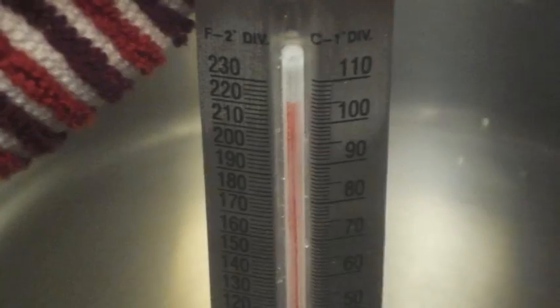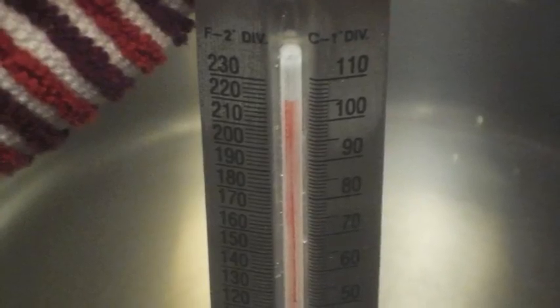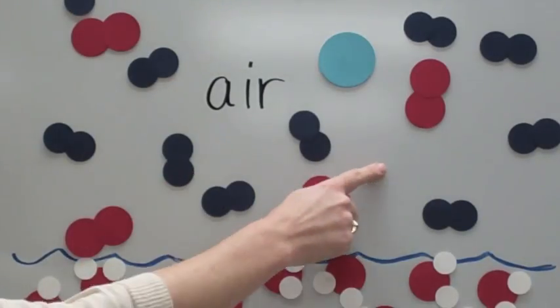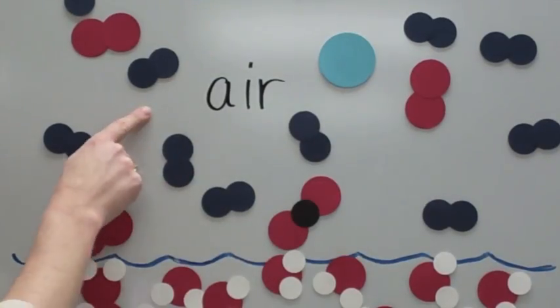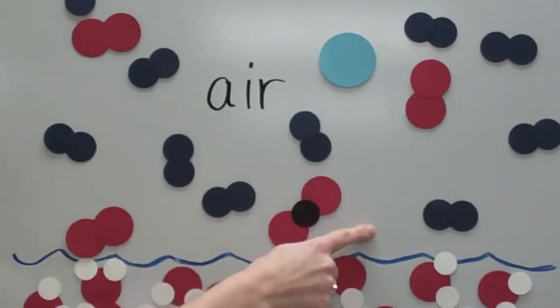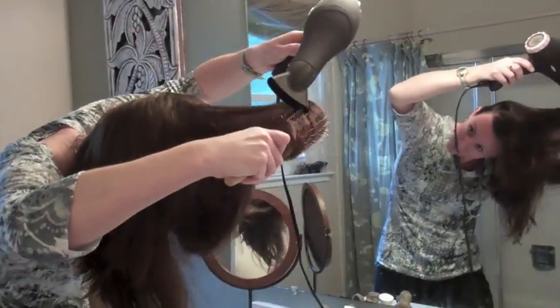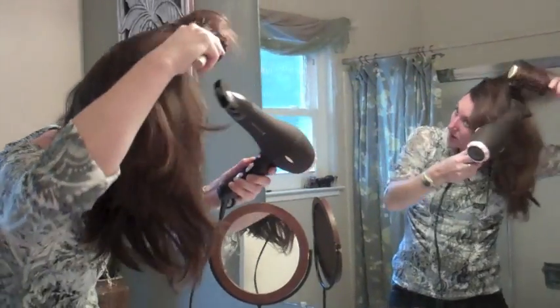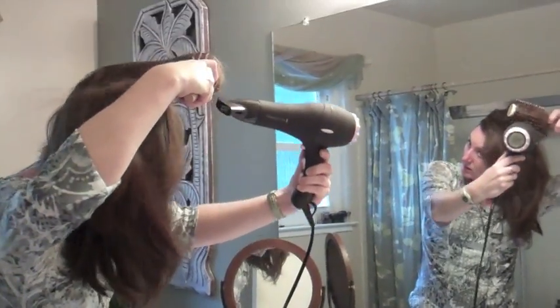Water boils at 212 degrees Fahrenheit, but water will evaporate at almost any temperature, with two requirements. There must be room in between the molecules of air above the water, and the water molecules must have enough energy to escape from the surface of the liquid.